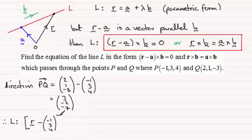And this will be crossed with the vector B, the direction vector, which is now PQ: 3, minus 2, minus 7. And this will equal 0. OK, so that's one form that we could have.